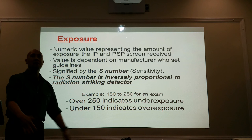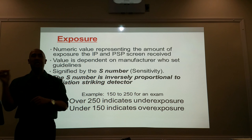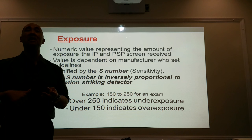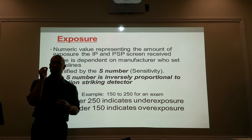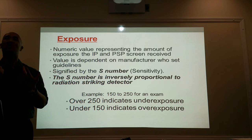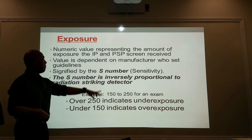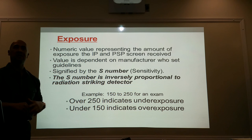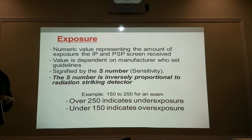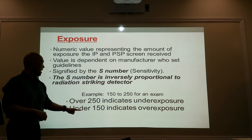When I put my PSP through the reader, not only will it extract the image — because it's the phosphor that stored the amount of x-ray energy coming from the patient, the remnant radiation — but it's also determining the amount of energy stored within those crystals, telling me the quality of x-rays I used to acquire that image. The S number is inversely related: higher numbers mean your patient was underexposed, lower numbers mean your patient was overexposed. Over 250 indicates underexposure; under 150 indicates overexposure.